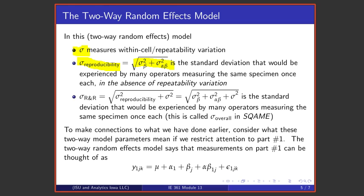As it turns out, if one takes sigma squared beta and adds sigma squared alpha beta, that's a variance. Taking the square root gives a standard deviation that would be seen in terms of variability if many operators measured the same part or specimen once each, assuming there's no repeatability variation. One might call that sigma reproducibility. If one adds, underneath that square root, a sigma squared repeatability variance to get this sum and then takes the square root, one has a standard deviation that would be experienced by many operators measuring a single specimen once each. That one might call the R&R standard deviation or sigma R&R.